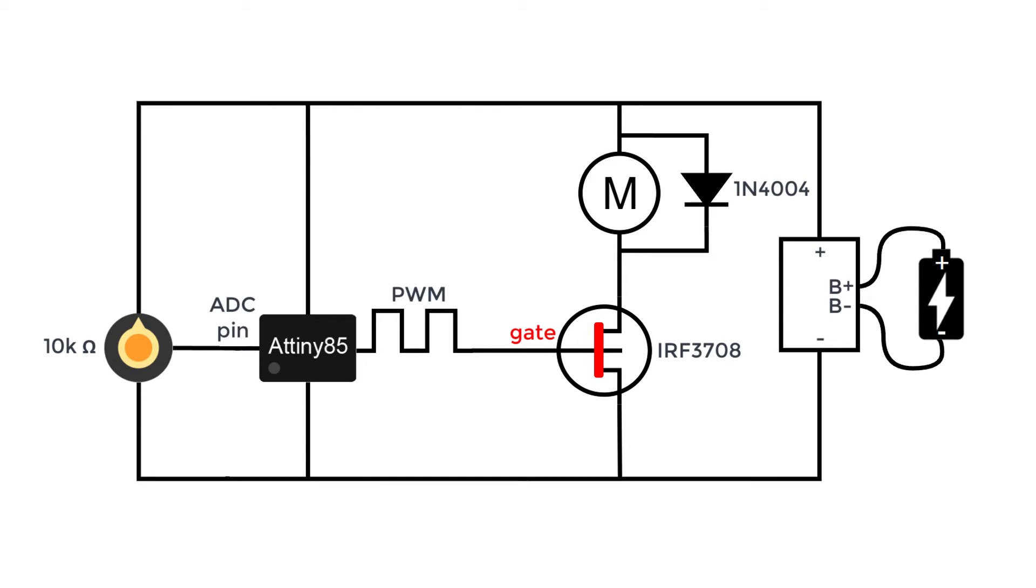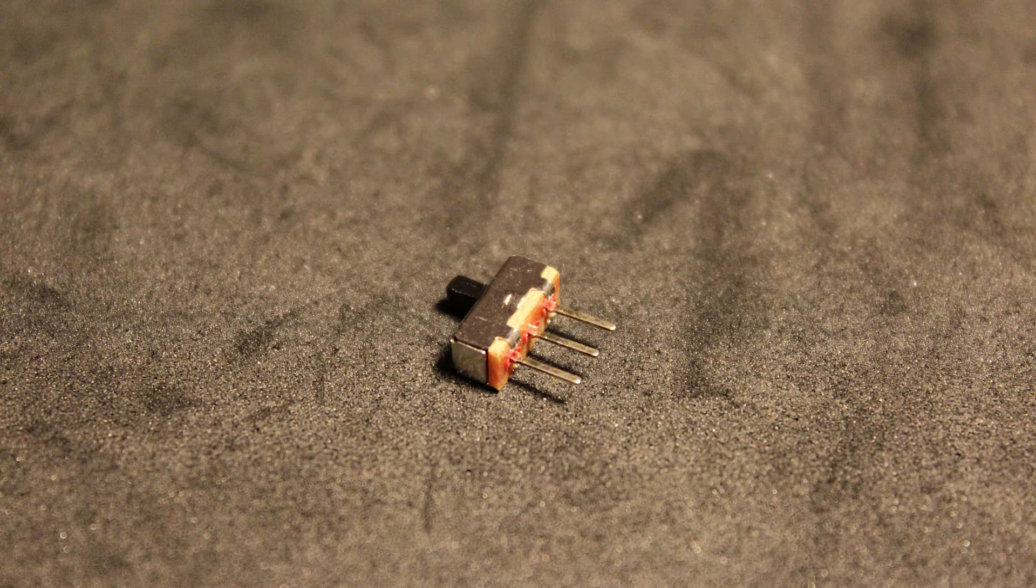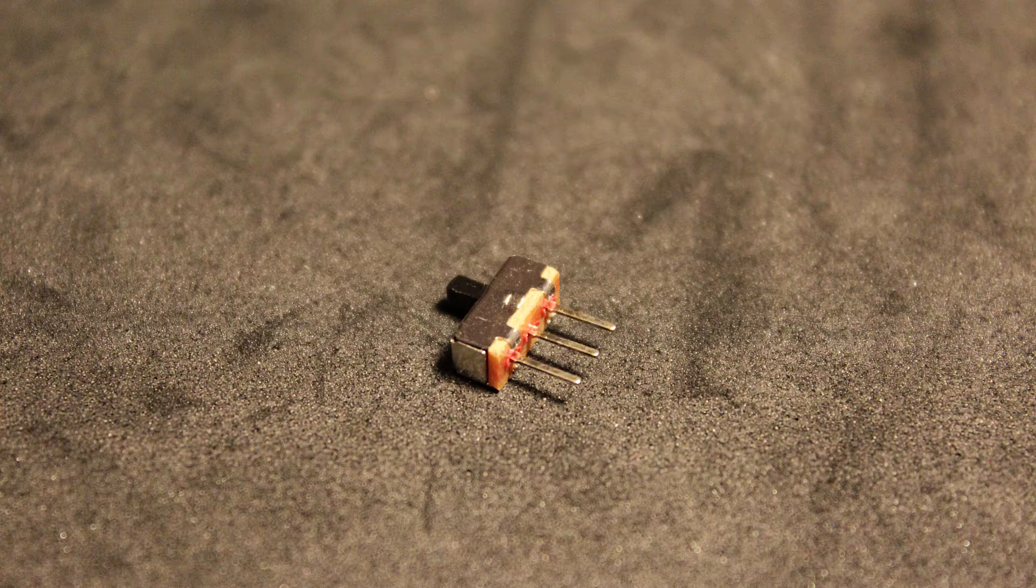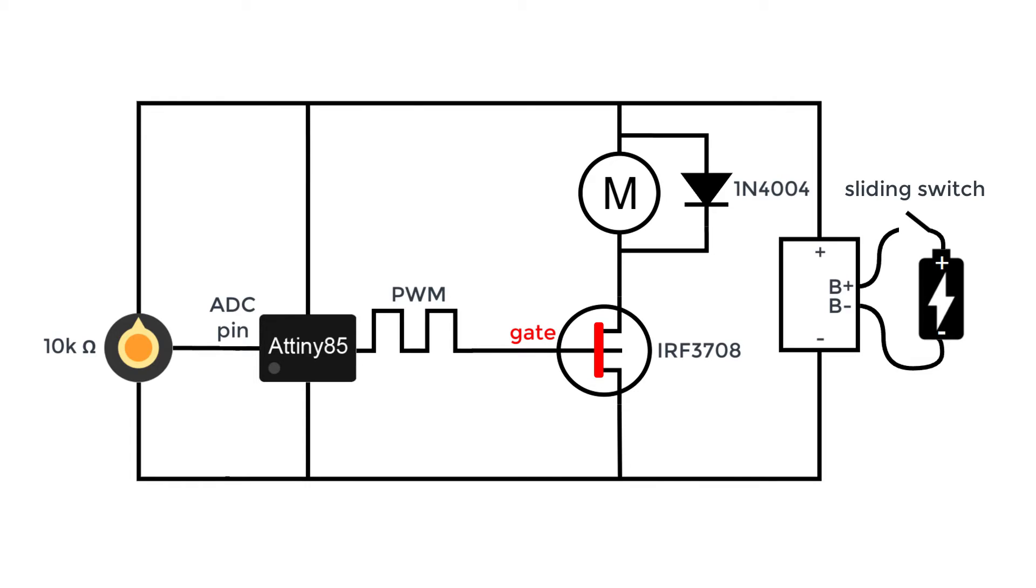We also need a way to turn the fan on and off, so we need to add a switch. I used a simple sliding switch. Since the voltage of a battery is not stable and goes down over time as it is used, the ATtiny85 will not work properly because it doesn't have a stable power supply, so we need to add a voltage regulator.